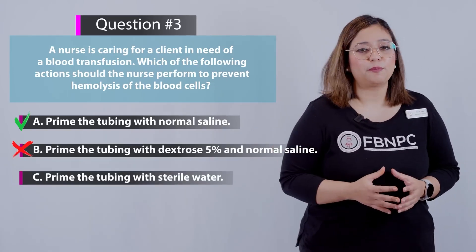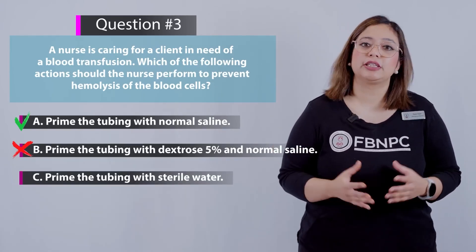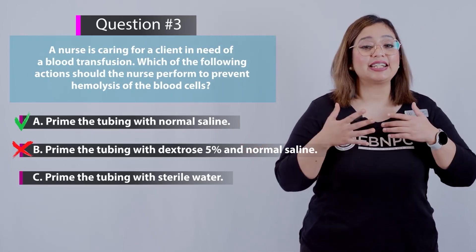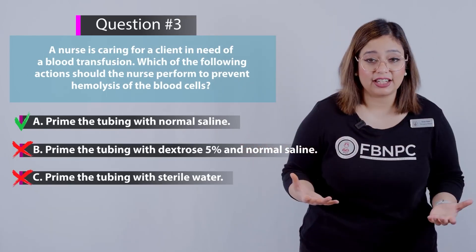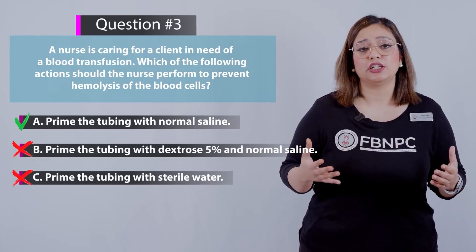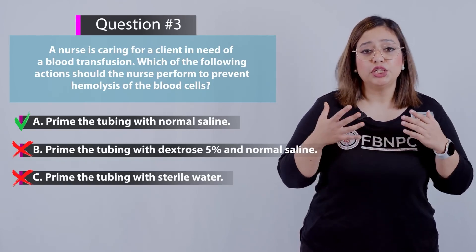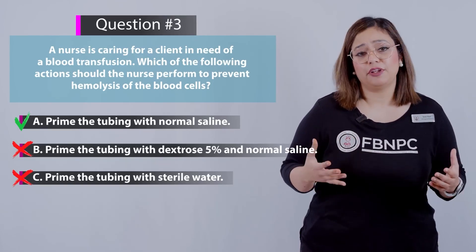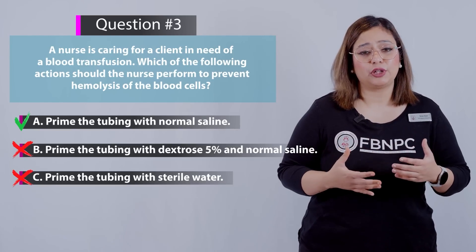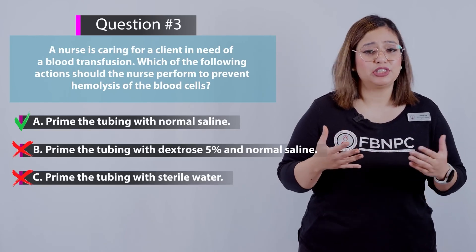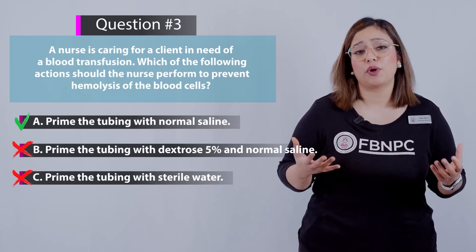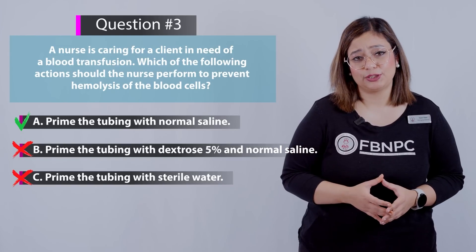Option C: priming the tubing with sterile water. That is incorrect. You can never use anything other than normal saline with blood transfusion. Sterile water for injections is for compounding purposes only and not for IV direct infusions.